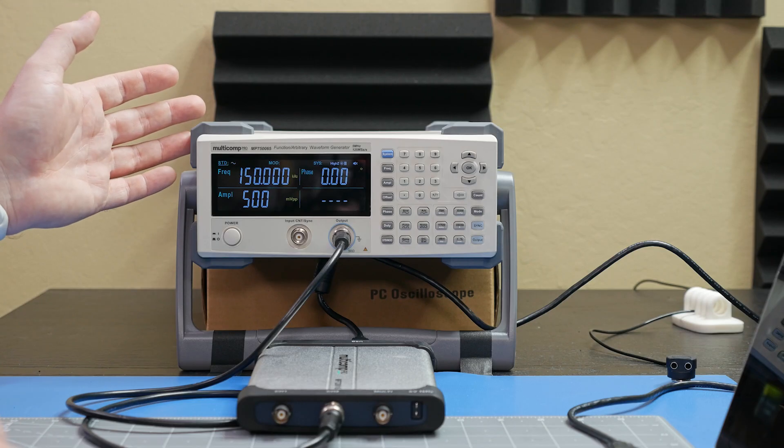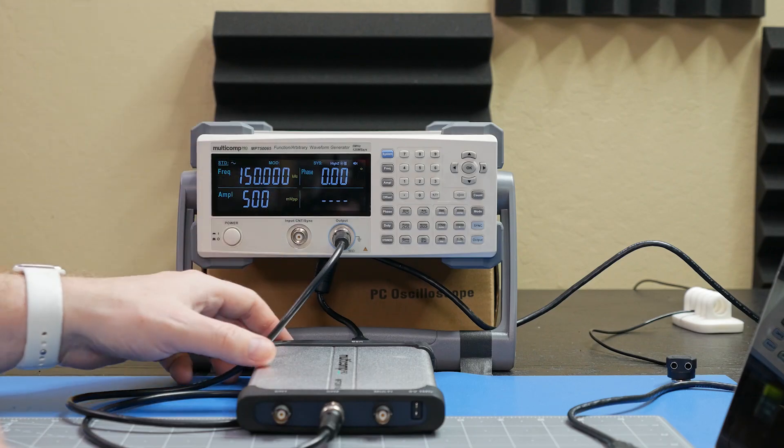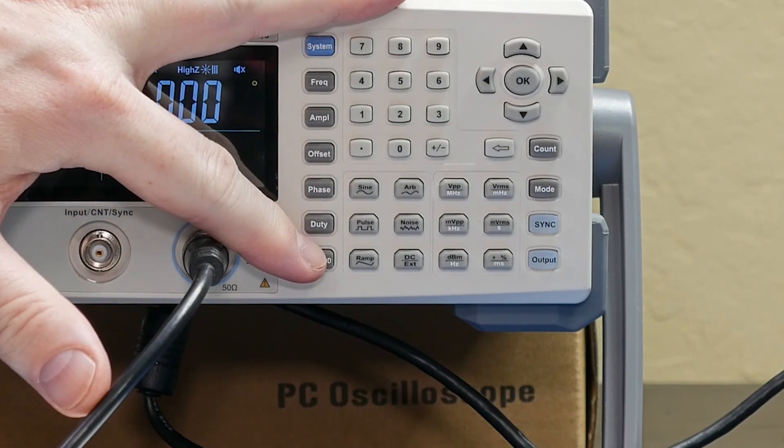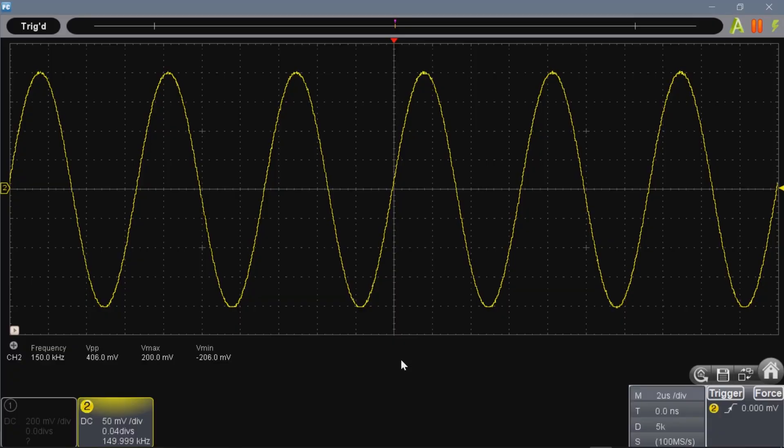Here I have my function generator hooked up to a Multi-Comp Pro USB-based scope. We'll use this to look at the different waveform types like sine wave, square wave, and triangle. The sine wave is the most basic waveform and it is usually the fastest the generator can output. This one is great for testing filter designs.